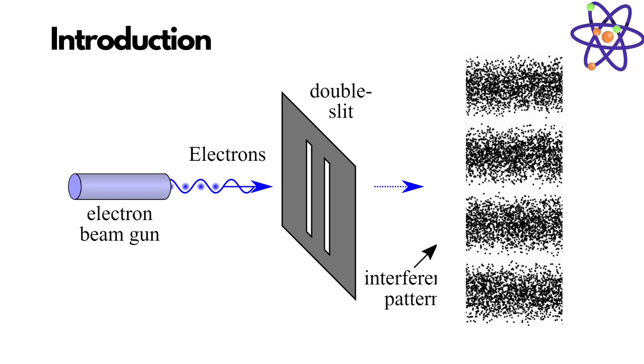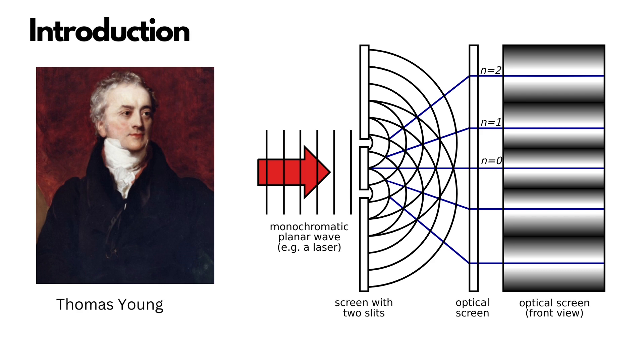The double-slit experiment was first performed in 1801 by Thomas Young. He shone a beam of light at a wall with two narrow slits in it. What he found was remarkable: when the light shone through the slits, it created an interference pattern on the wall behind it.